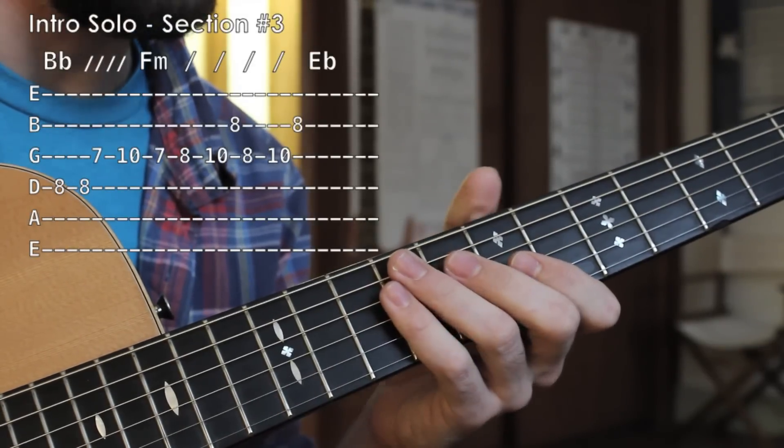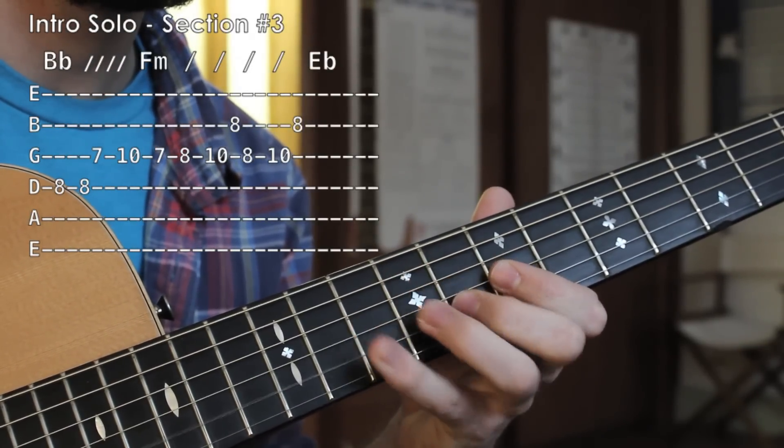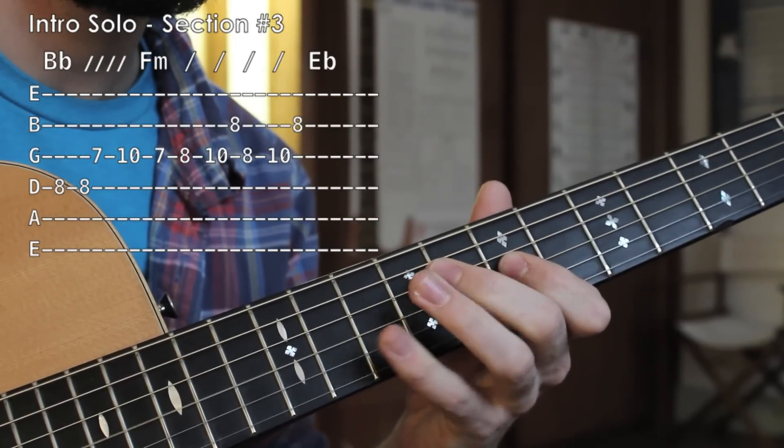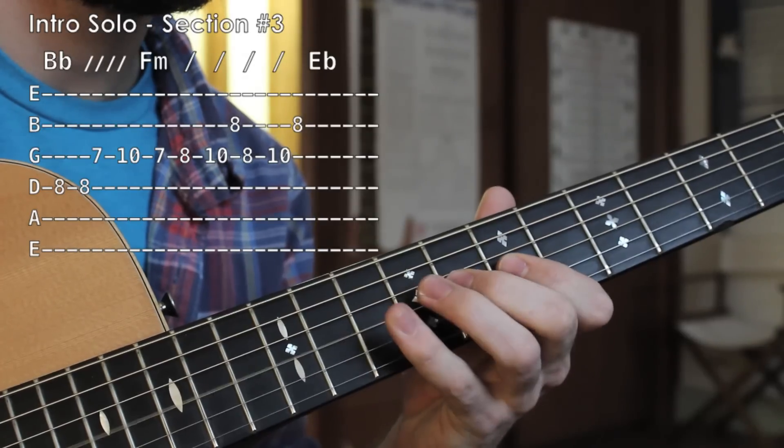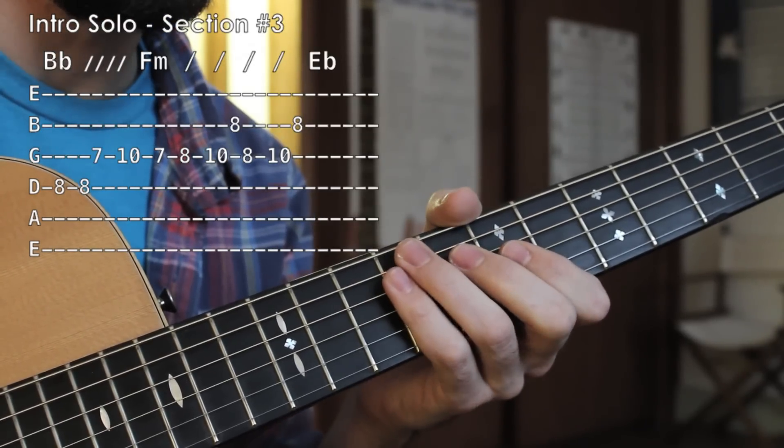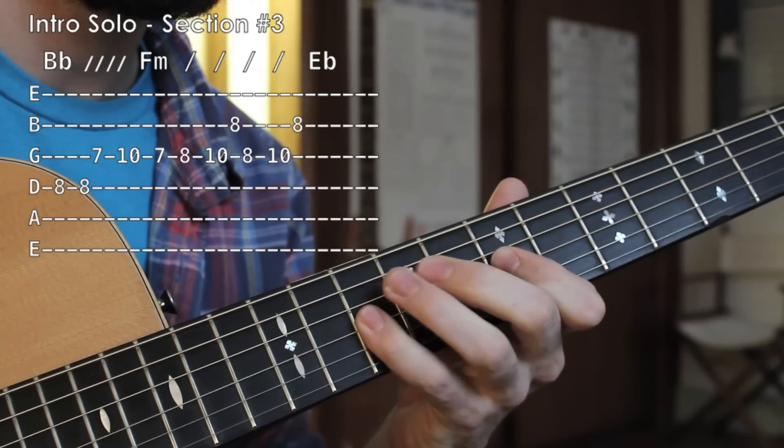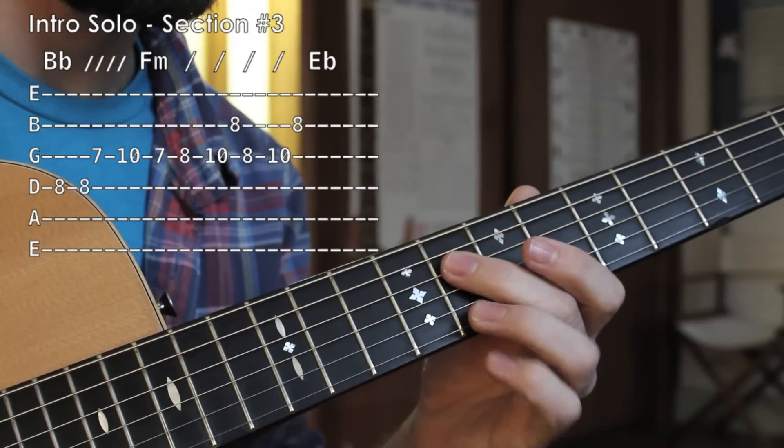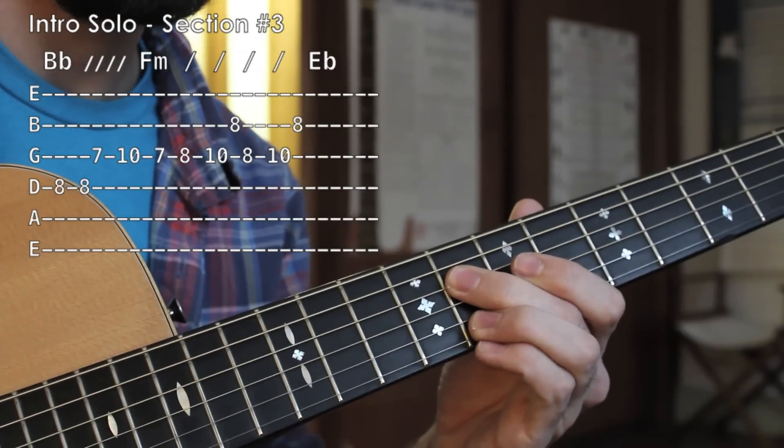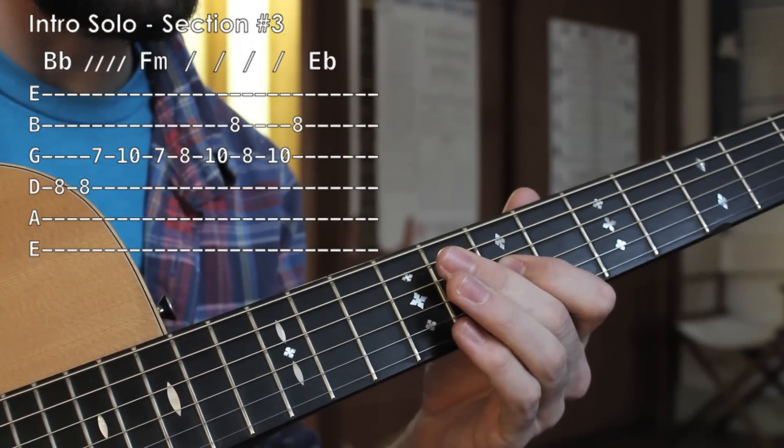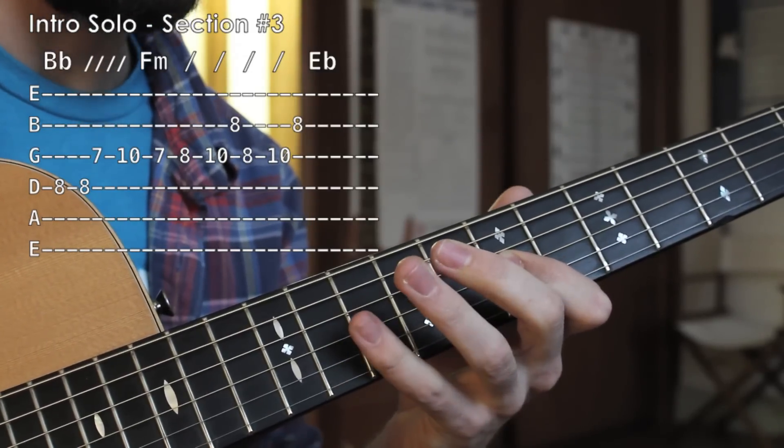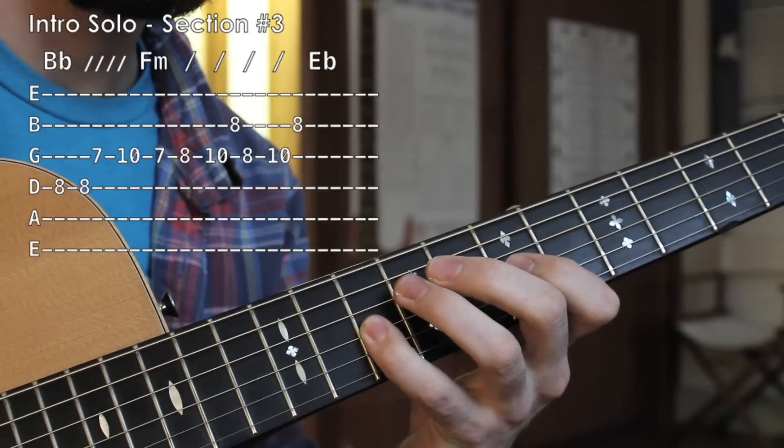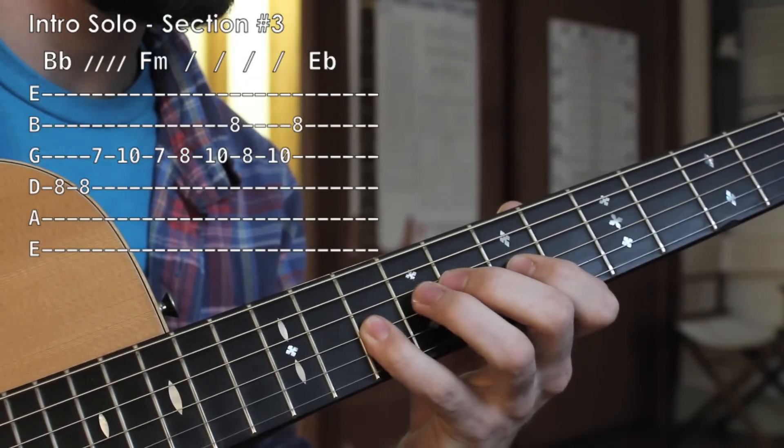Okay, so moving on to part number three. It sounds like this. Real slow. One more time real slow. Okay, so that was the eighth fret of the D string. A little bit of a pause. Play it again. To the seventh fret. So far we have. Then I'm reaching up to the tenth fret of the G string. So far we have. Next I'm going seven, eight, ten.